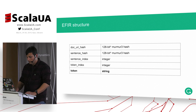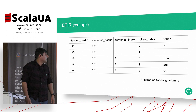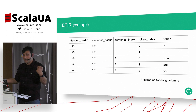This data structure — here's just an example of how it's stored in Parquet files — is very simple: sentence index, token index, and the token. You can reconstruct original documents from this.